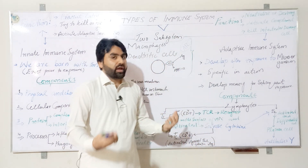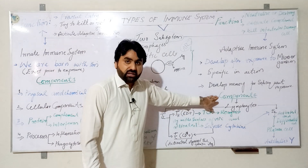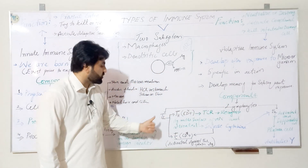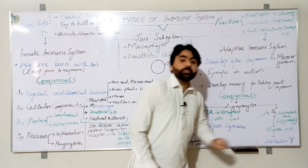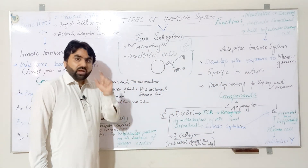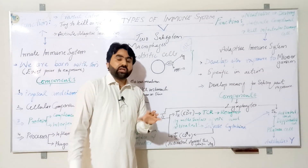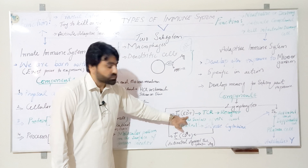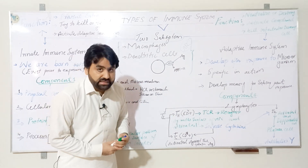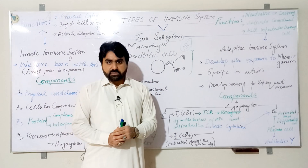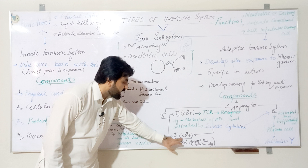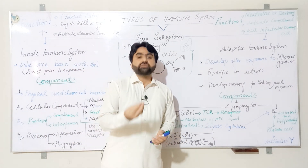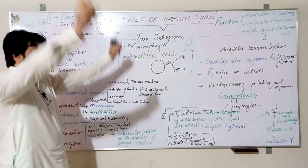The components of adaptive immunity include lymphocytes. There are two types: T lymphocytes and B lymphocytes. There are two subpopulations of T lymphocytes: T helper cells, which carry the CD4 antigen and are also called CD4-positive T lymphocytes, and cytotoxic T lymphocytes, which carry the CD8 antigen and are therefore known as CD8-positive T lymphocytes.